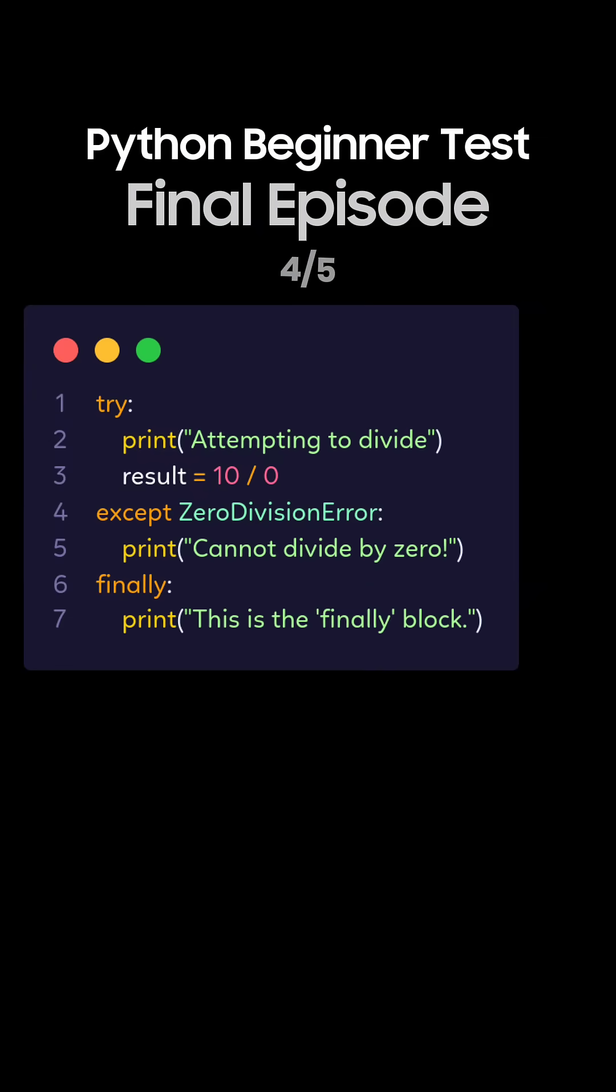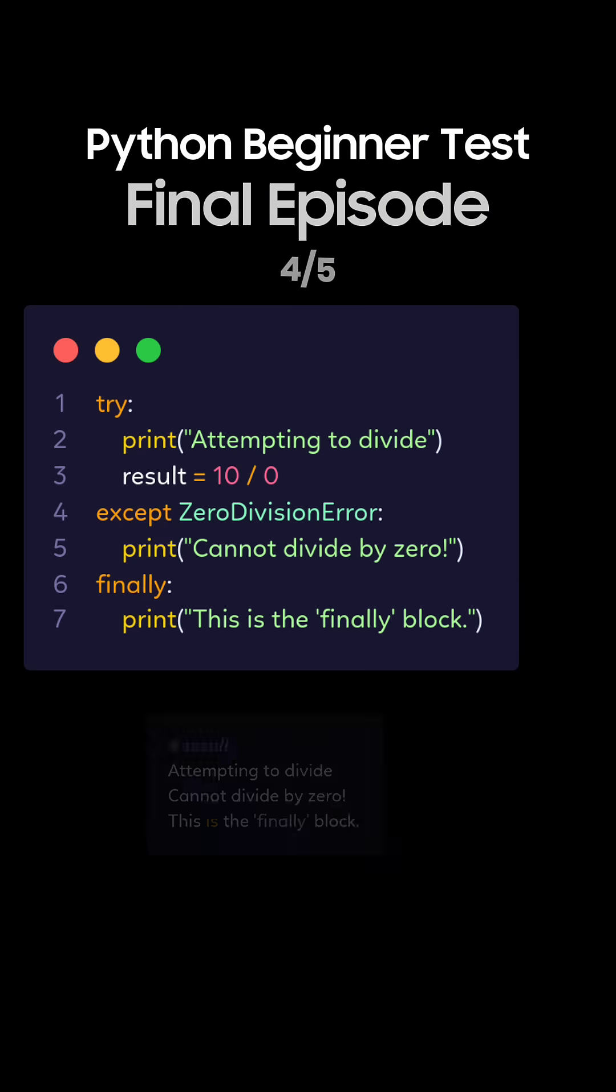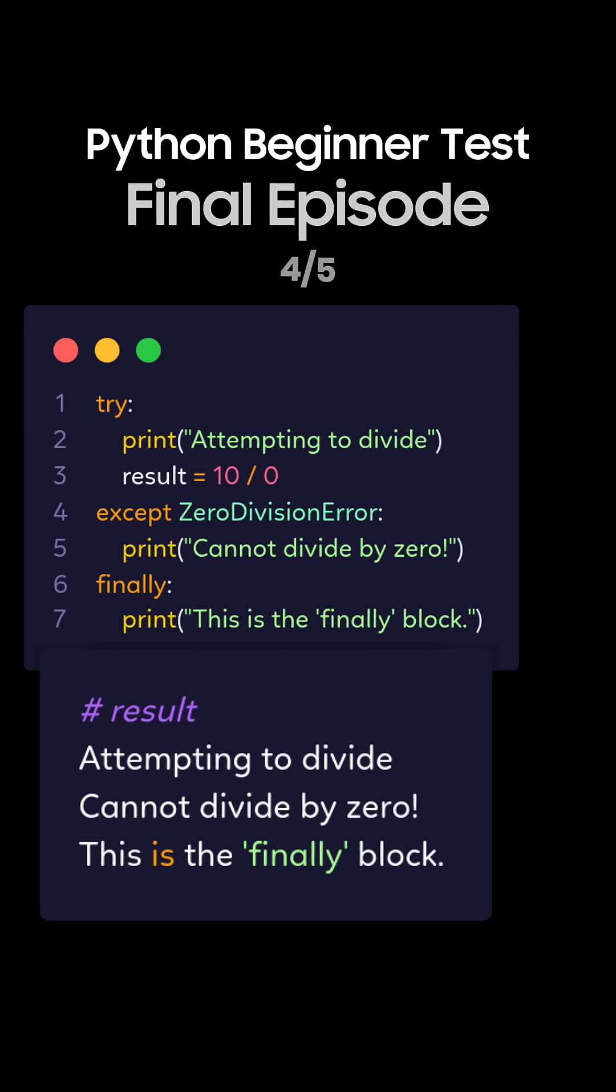Question 4: What's the output of this Python code using finally block? This is the correct answer. The finally block runs no matter what, even if an error occurs.